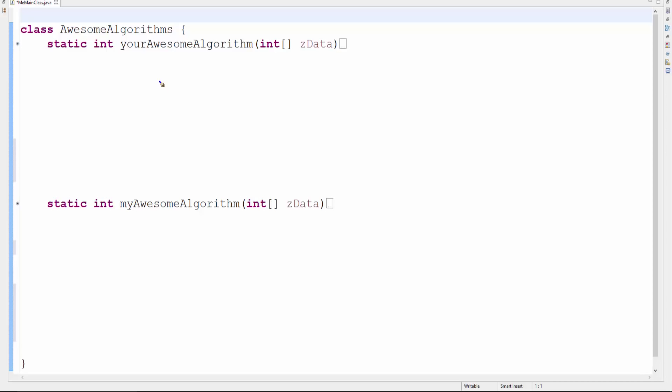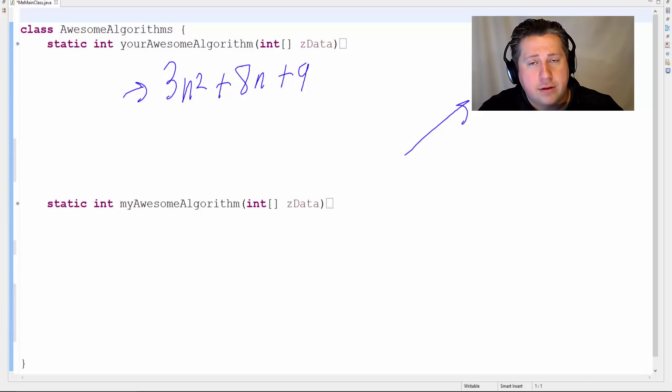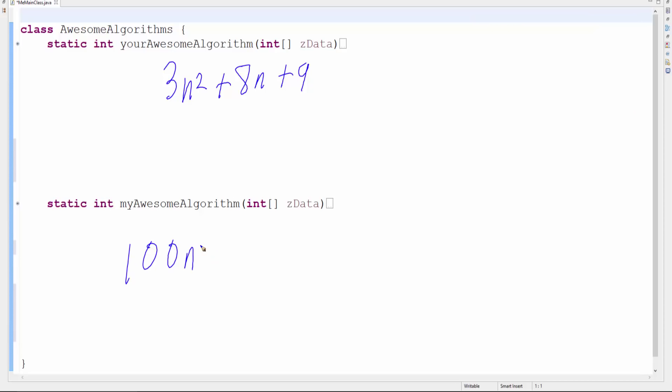We do the analysis like you saw in a previous video. And let's say your algorithm came out to 3n² + 8n + 9. And how we got that, we don't really care. It's the function we're worried about. If you want to see how we could come up with something like that, look at the previous video in the playlist.